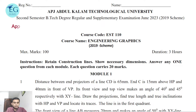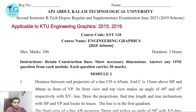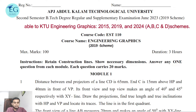The distance between end projectors of a line CD is 65 mm. End C is 15 mm above HP and 40 mm in front of VP. Its front view and top view make angles of 40 degrees and 45 degrees respectively with the XY line. Draw the projections, find the true length and true inclination with HP and VP, and locate its traces.